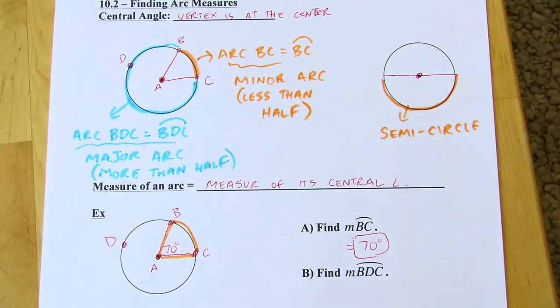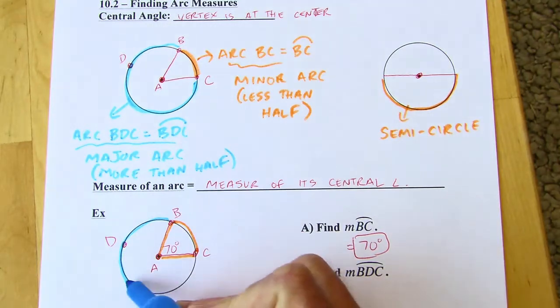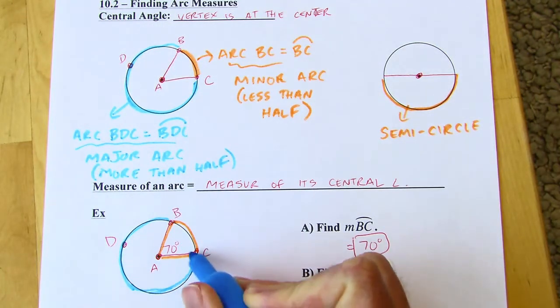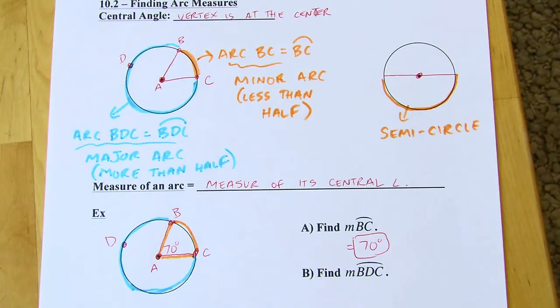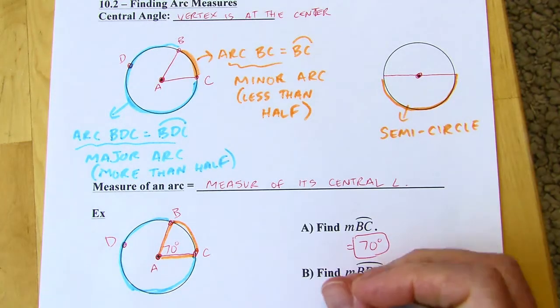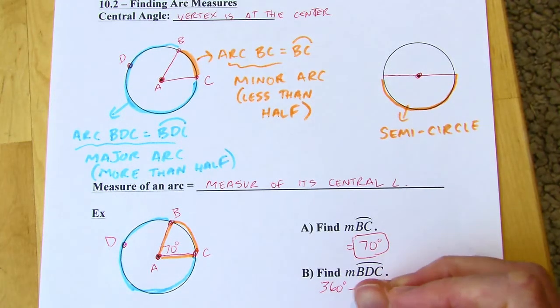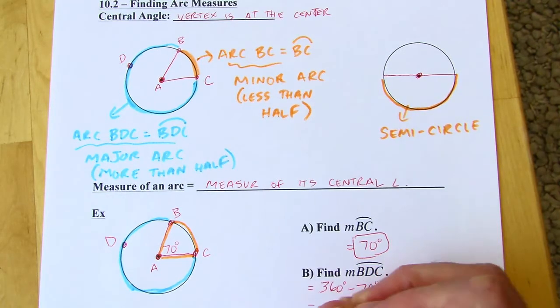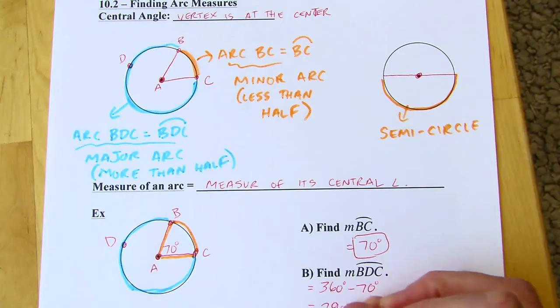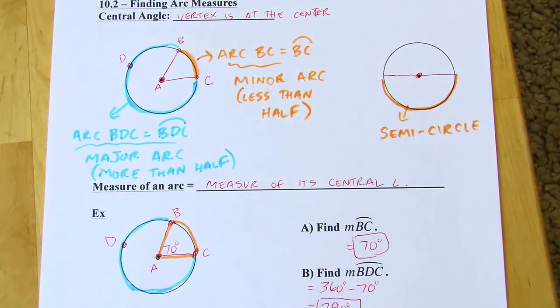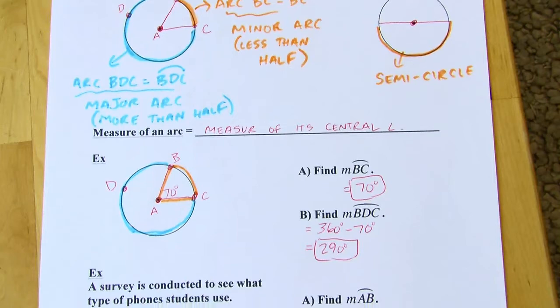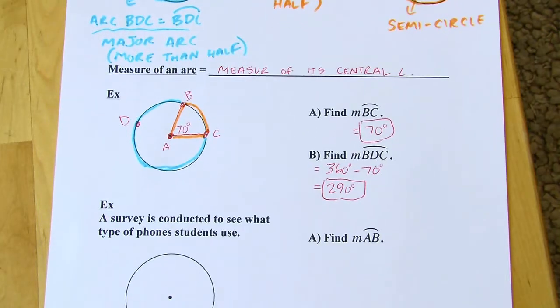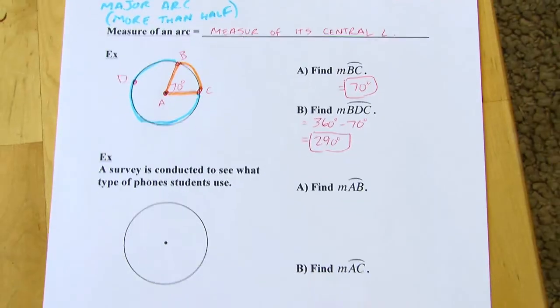So then if I'm looking for BDC, well, that's this arc. And the angle's not measured there, or the measure of the angle isn't noted there, but I know the whole circle is 360 degrees. So I can just take 360 and subtract out the 70 degree chunk. And that's going to come out to 290 degrees then. Pretty straightforward if you know what to look for.